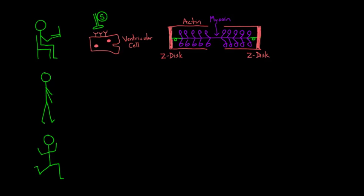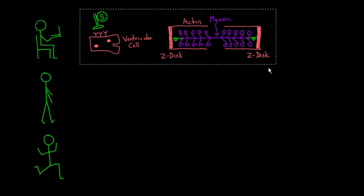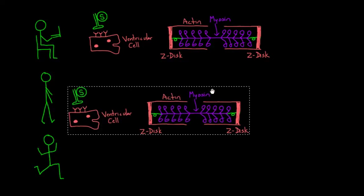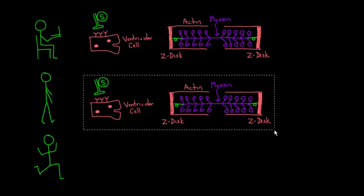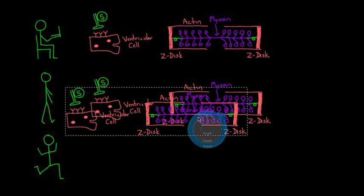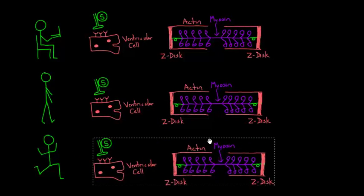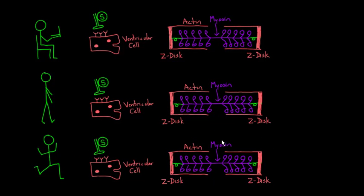I'm actually going to just take this and cut and paste it a couple of times so that we can actually use this for our two other situations. So now you can see our three situations side by side with our actin myosin and our Z disk. So what would happen in situation one? Well, in situation one you're just kind of hanging out.